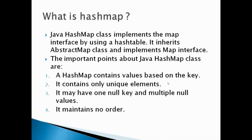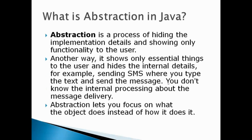What is HashMap? The Java HashMap class implements the Map interface using a hash table. It inherits AbstractMap class and implements the Map interface. Key points: HashMap contains values based on a key, contains only unique elements, may have one null key and multiple null values, and maintains no order.